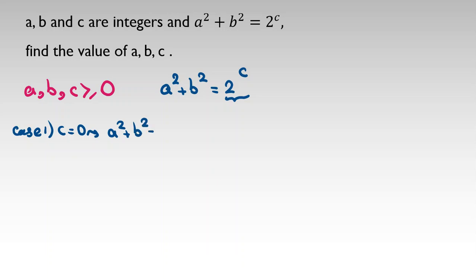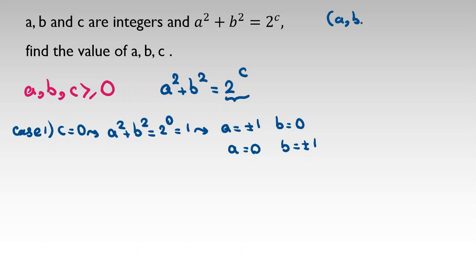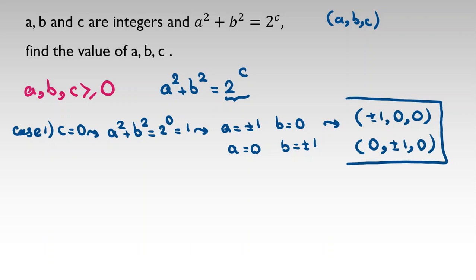Case one: c equals zero. Then a squared plus b squared equals two to the zero, which is one. The integer solutions are a equals plus or minus one, b equals zero, or a equals zero, b equals plus or minus one. So the triples (a, b, c) for this case are (±1, 0, 0) and (0, ±1, 0).